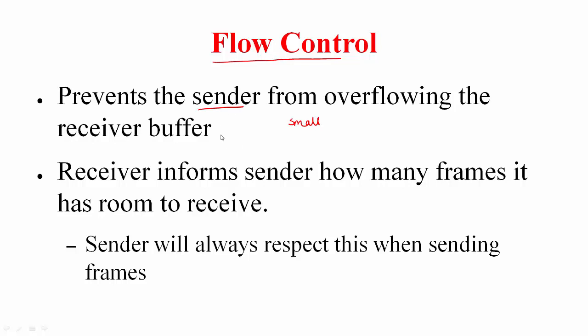The way flow control can be handled as part of reliable data transfer is by the receiver informing the sender how many frames it has room to receive. And the sender is always going to respect this. For example, even if its SWS is very large, it will not send packets even though it has packets to send, because the receiver told it that it doesn't have space to accept these packets. We'll see more of this when I cover TCP.